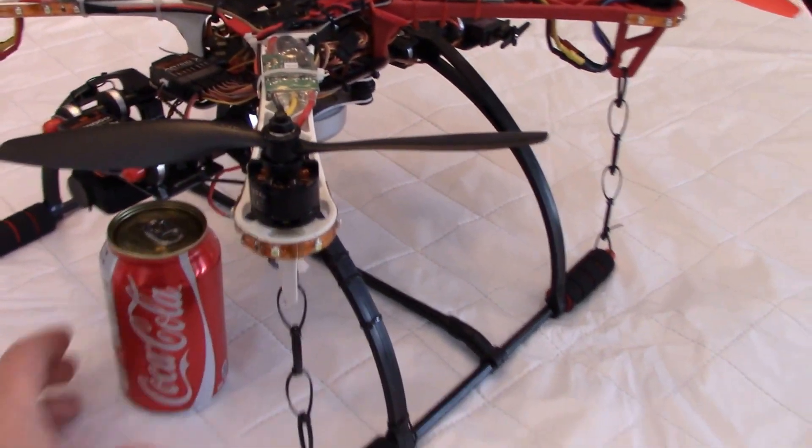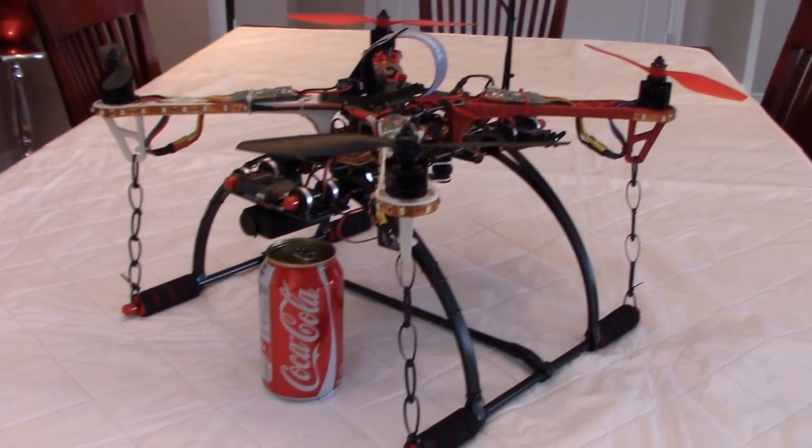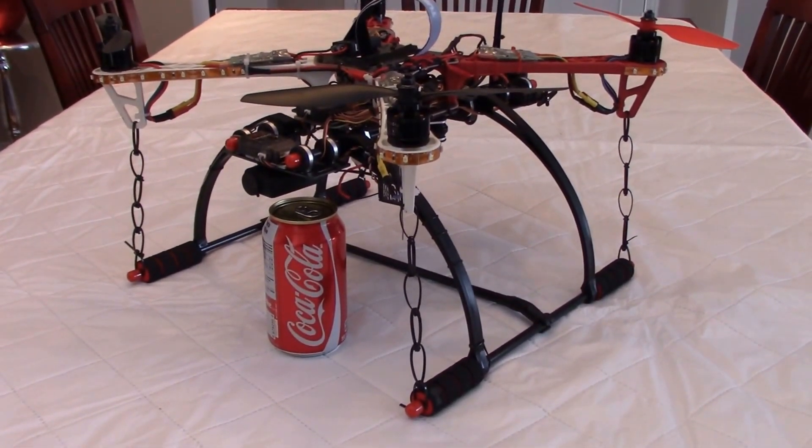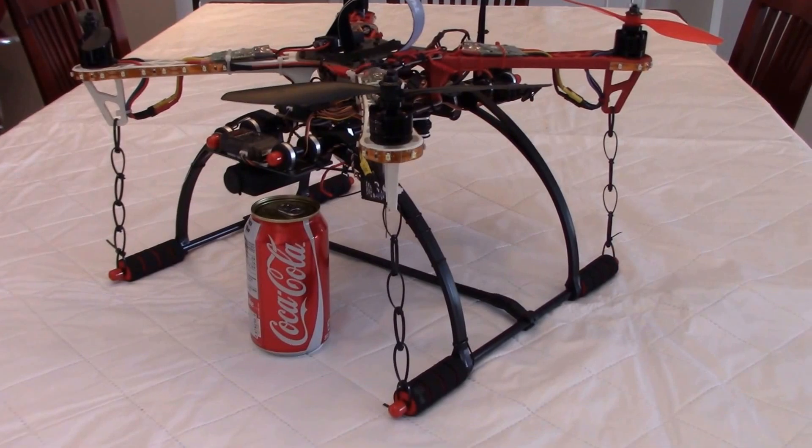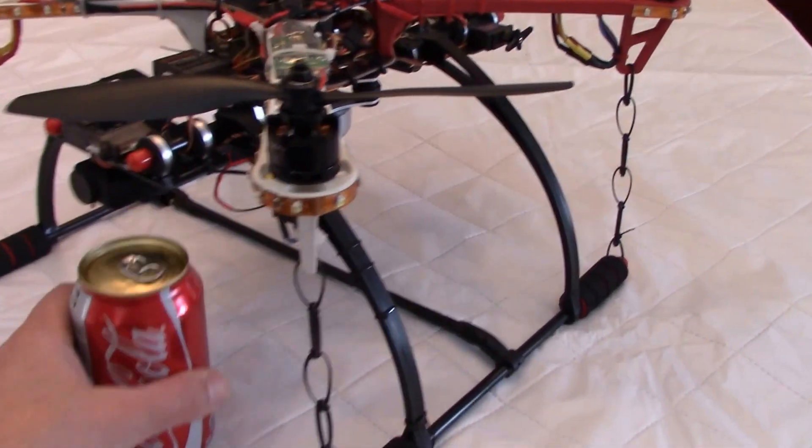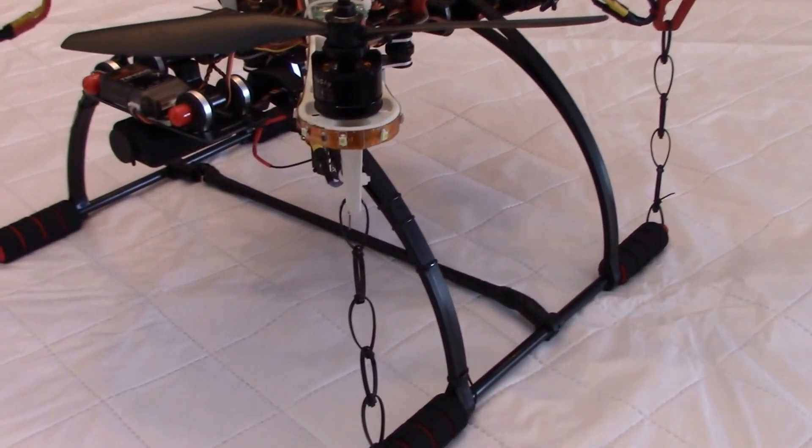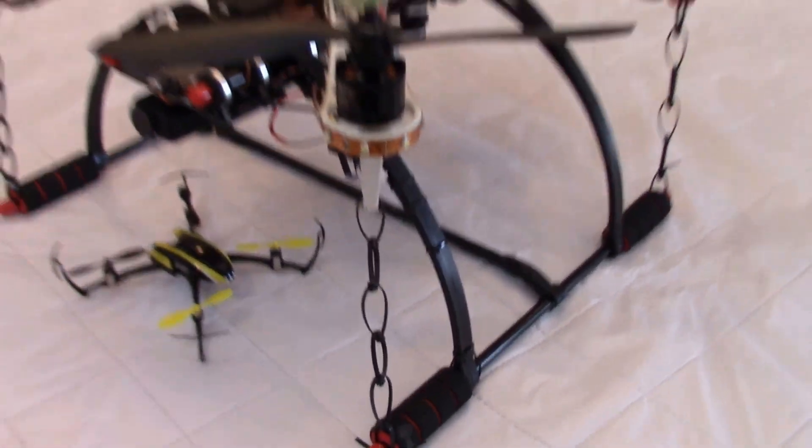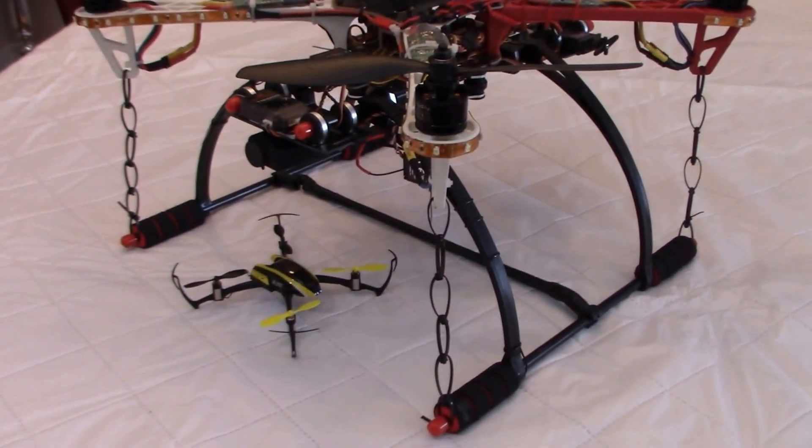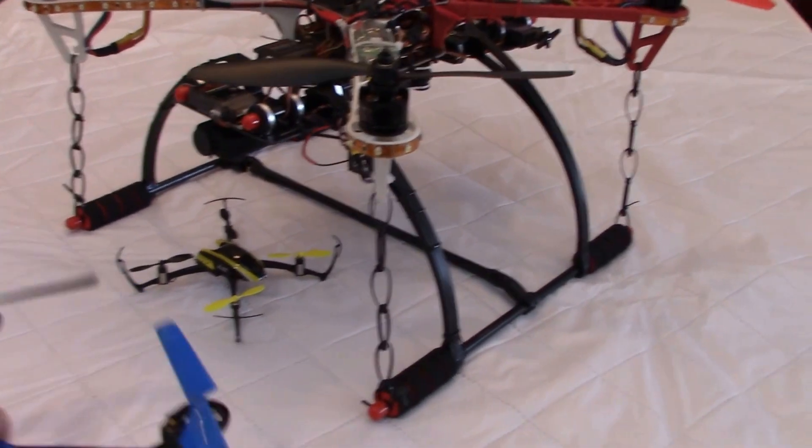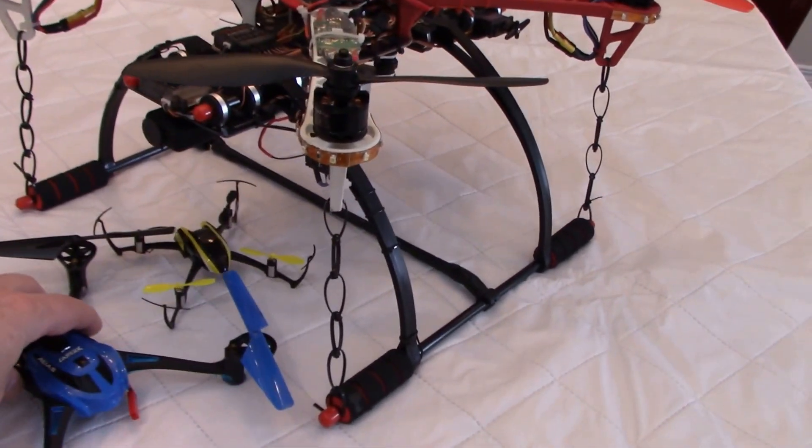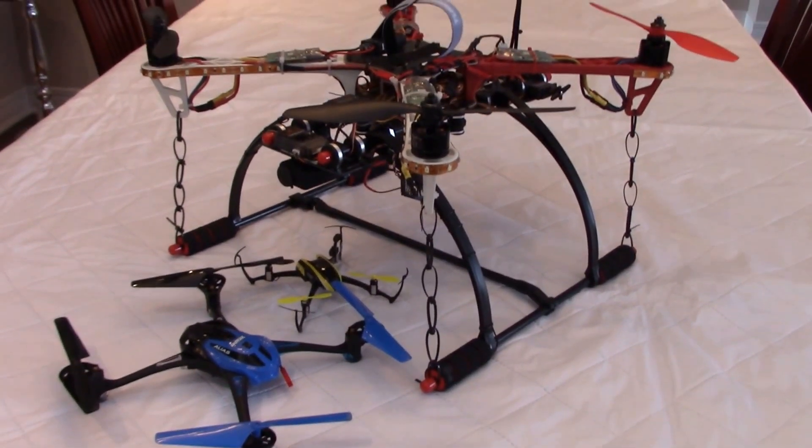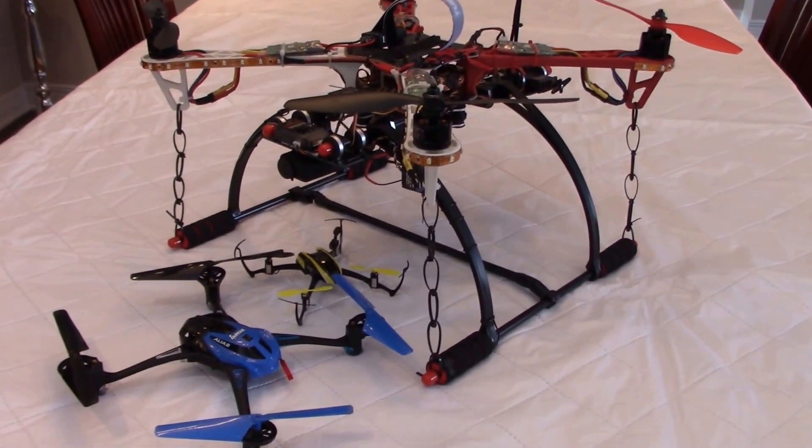Here's a can of Coke so you can see the size of this drone. It's a big drone, it weighs about three pounds or 1.3 kilos. You can also compare the size with my Nano QX and also the Traxxas Alias, so that gives you an idea of the size.